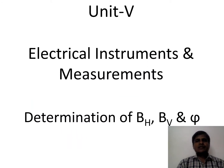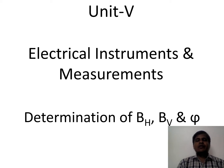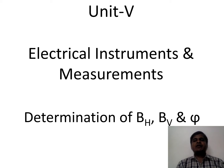The 47th session, Unit 5: Electrical Instruments and Measurements. In this session we will determine the expression for horizontal component of Earth's magnetic field, vertical component of Earth's magnetic field, and angle of dip.